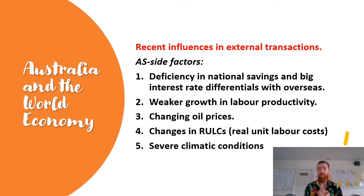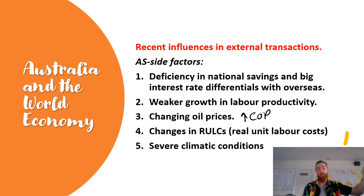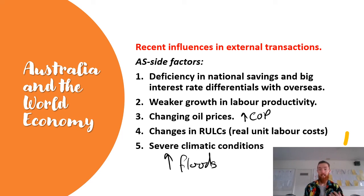On the aggregate supply side: a deficiency in national savings and big interest rate differentials with overseas — though savings have started to increase since COVID, making this less of a factor recently. Weak growth in labor productivity has been an issue since the late 1990s, making Australia struggle to be internationally competitive and less able to operate in the global market. Changing oil prices have been surging in recent years, increasing costs of production and making us less competitive. Changes in real unit labor costs — the minimum wage went up 5.3% last year — will make things more expensive for businesses, passed on through higher prices, making us less competitive worldwide. Severe climatic conditions such as floods and bushfires have been damaging Australia's natural resources, making production less efficient and less competitive overall.